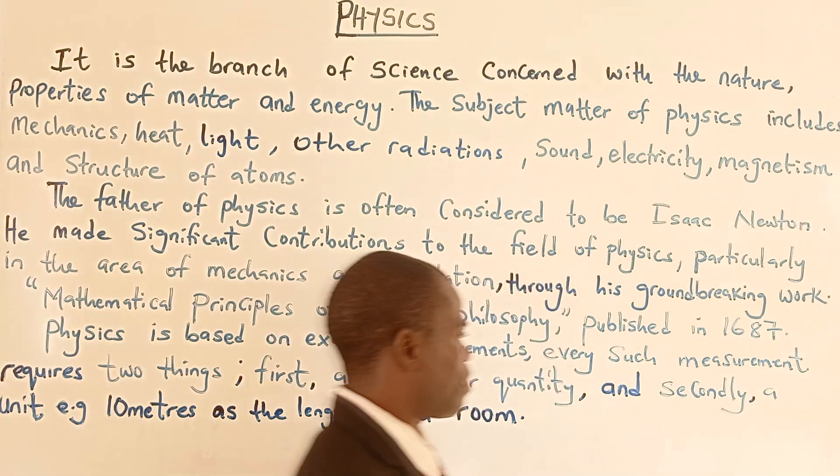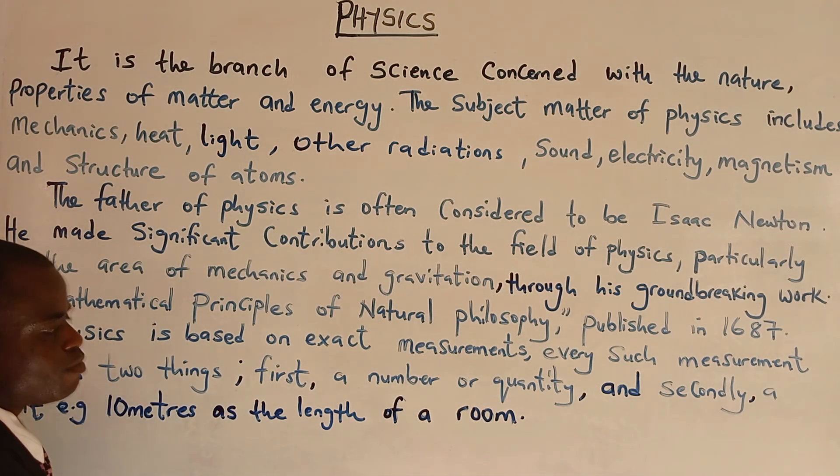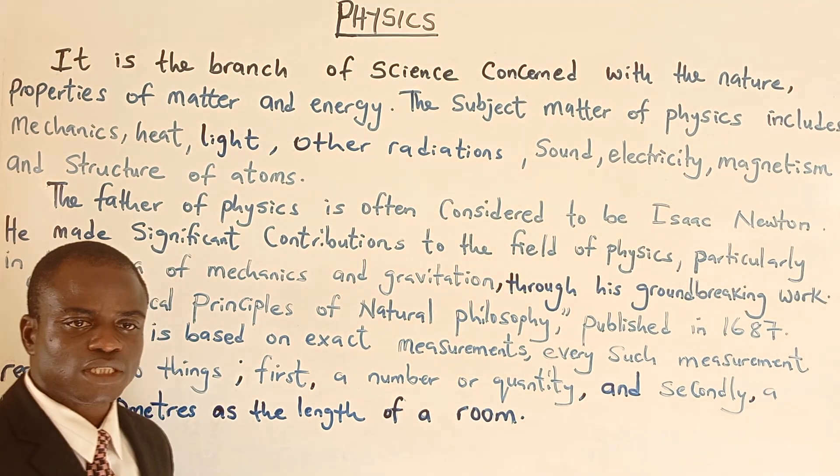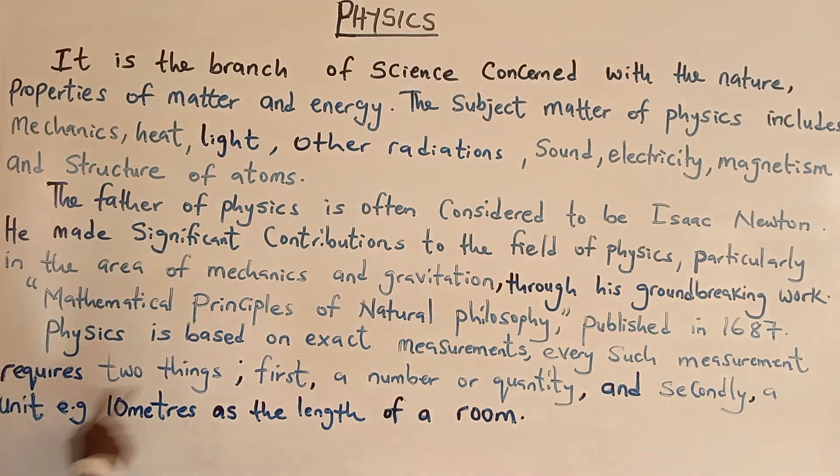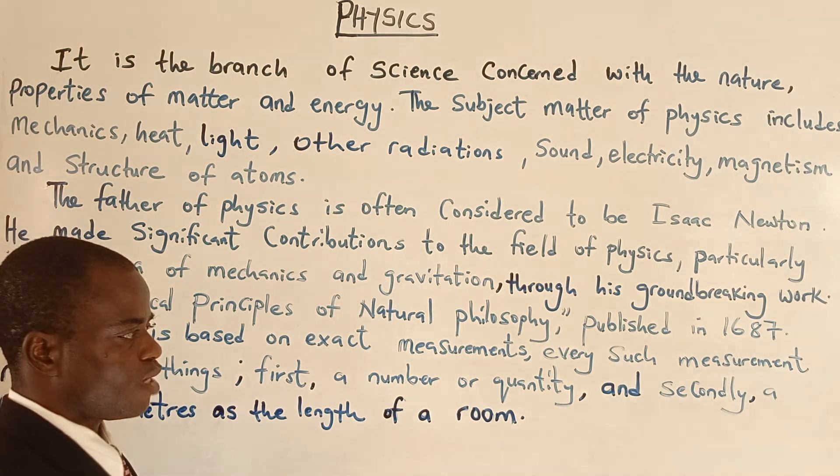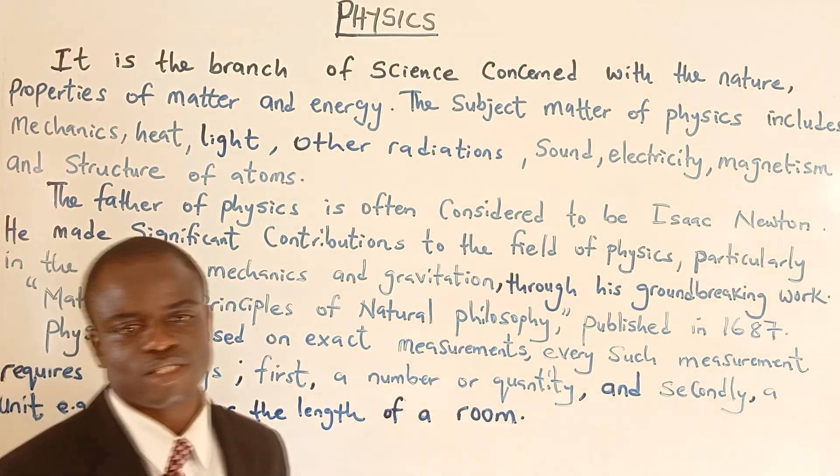Physics is based on exact measurements. Every such measurement involves two things: first, a number or quantity, and secondly, a unit.